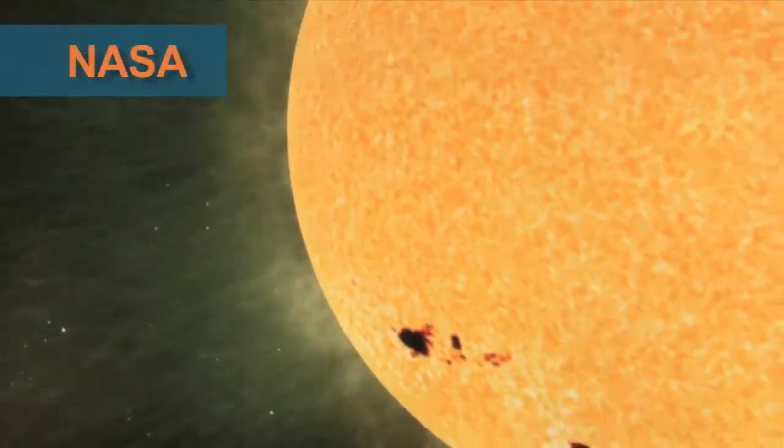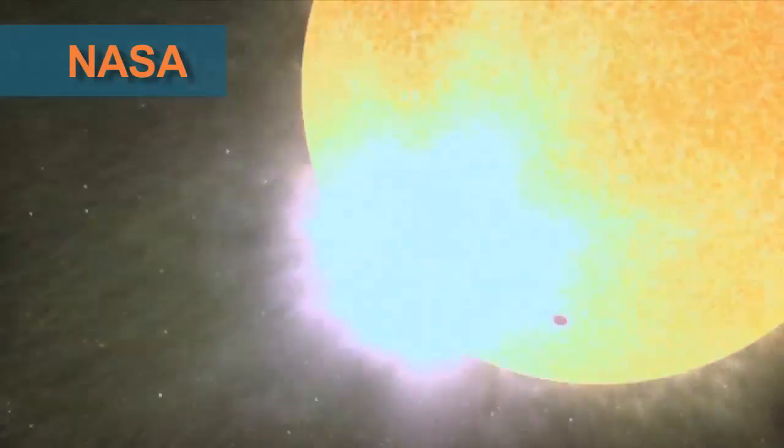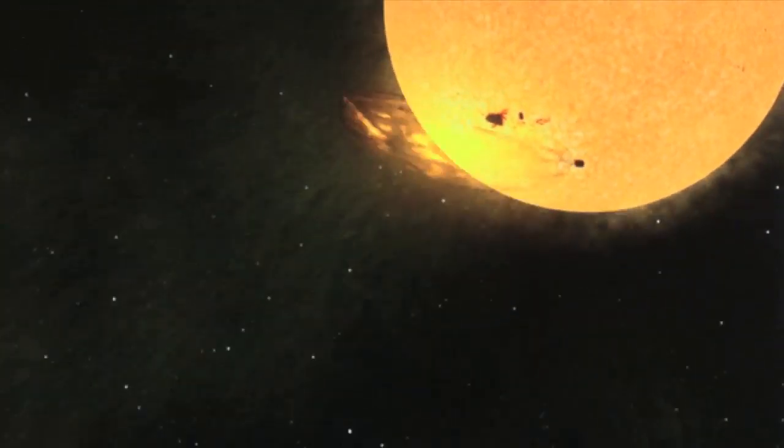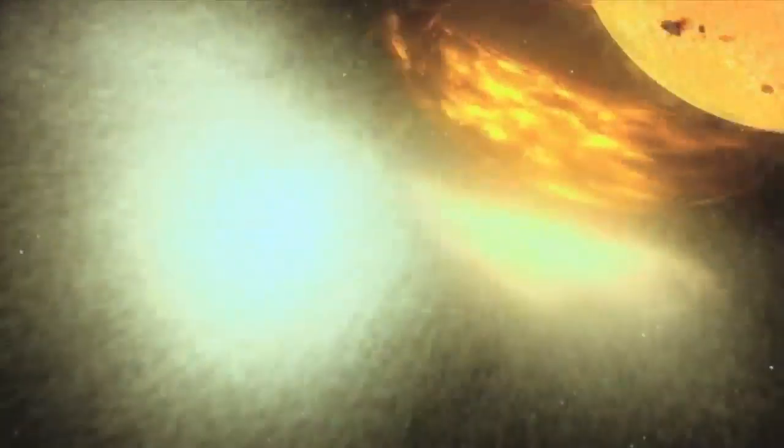The Earth is constantly bombarded with energy from the Sun. Without it, the Earth would die. In addition to sunlight, charged particles ejected from the Sun continually stream outward to form the solar wind.